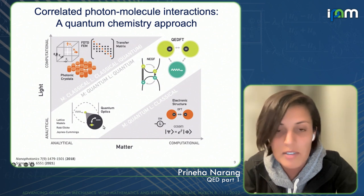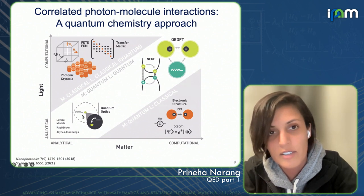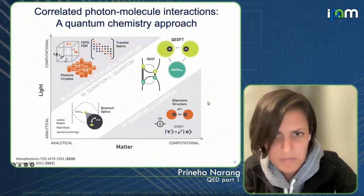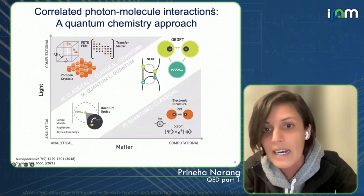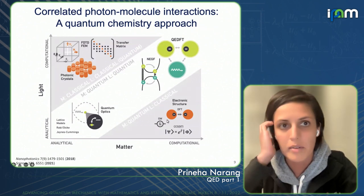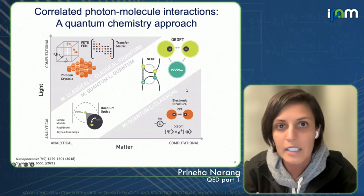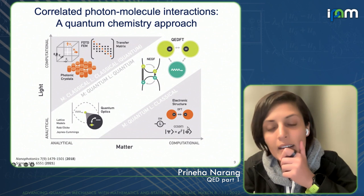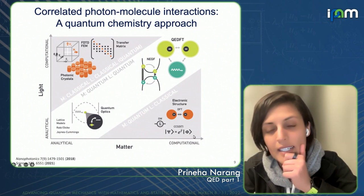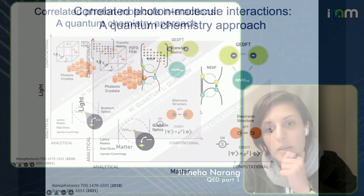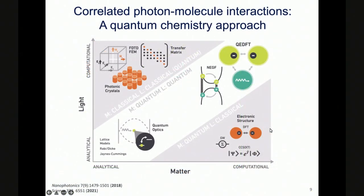On the other extreme, you look at the matter side. There are approaches in electronic structure theory that have been around for a while. But including the photon — particularly the quantized nature of light — in these theories is incredibly hard. That has led us to think about how we can best merge the ideas of quantum optics with electronic structure.